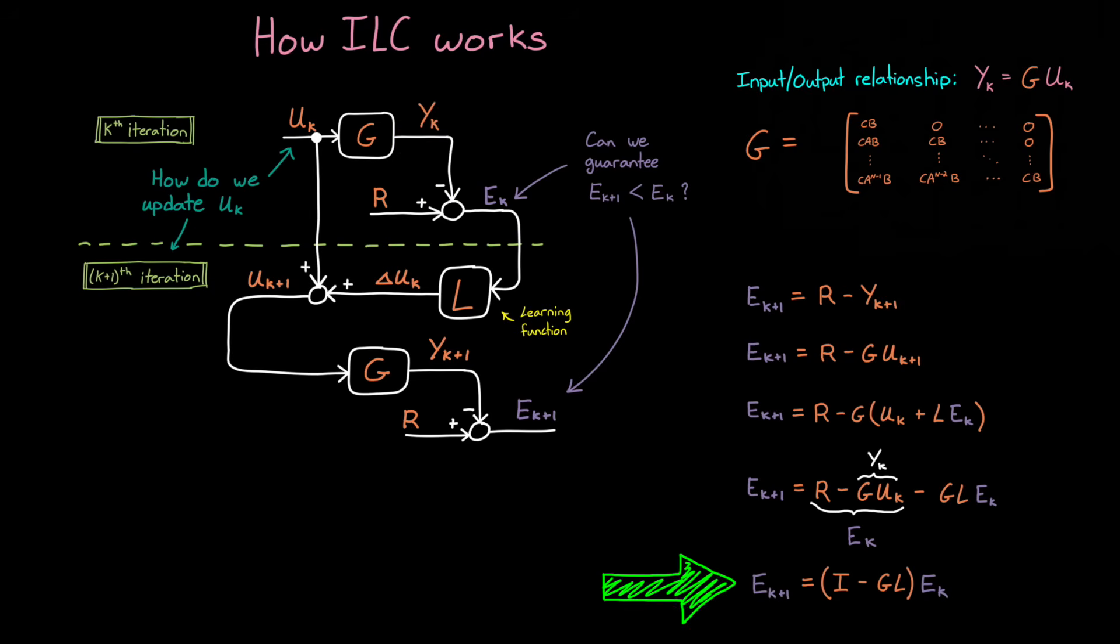what we're left with is that the error in the next iteration is equal to the identity matrix minus gl times the current error. This is called the error dynamics equation, which dictates how the error changes each iteration.